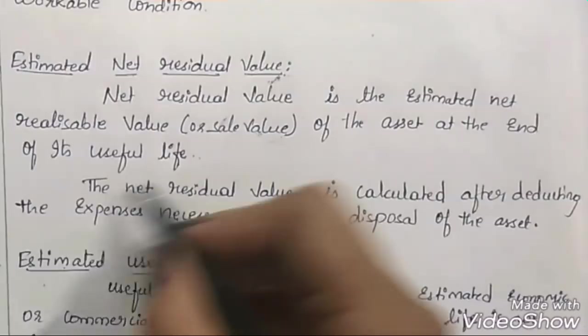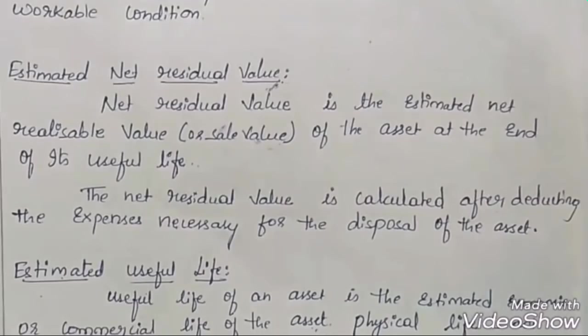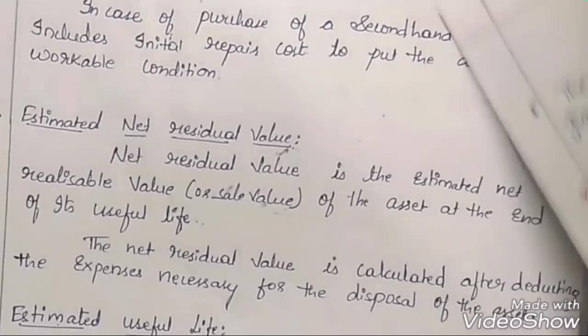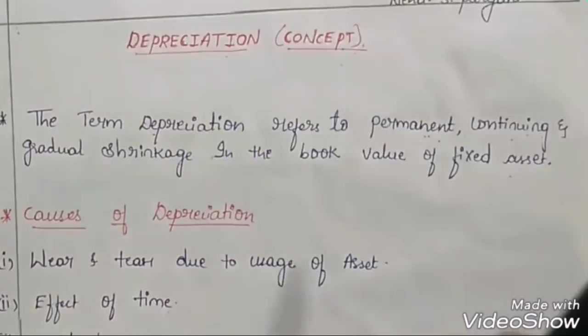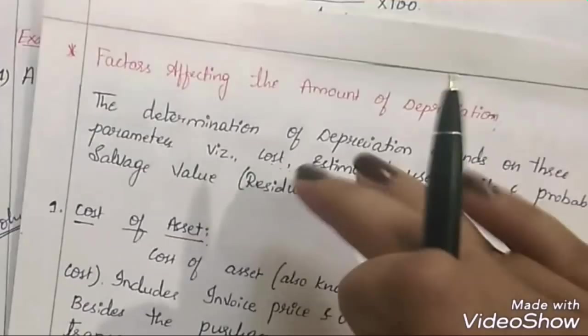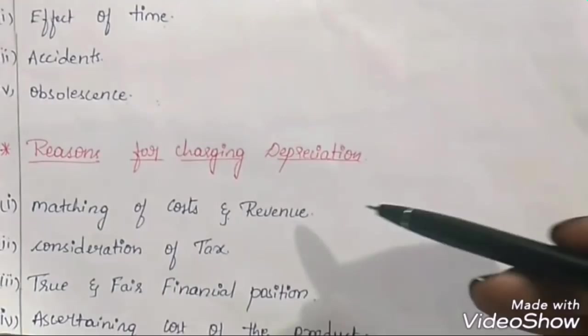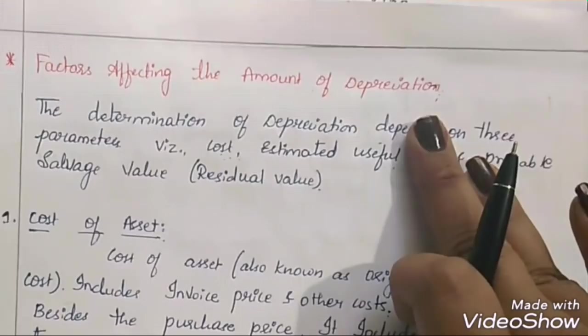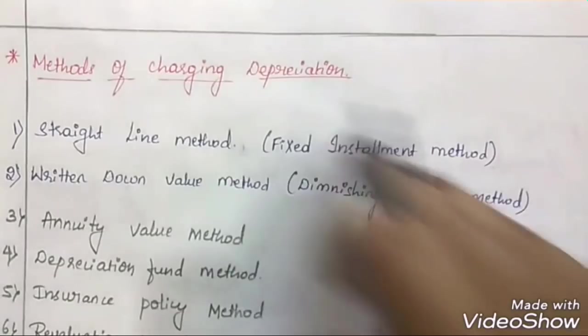Up to now we have learnt about the meaning of depreciation — which is the continuous reduction in the value of an asset — causes for depreciation, reasons for charging depreciation, and factors affecting the amount of depreciation. Now let's talk about the methods of charging depreciation. The most common methods are straight line method and written down value method.